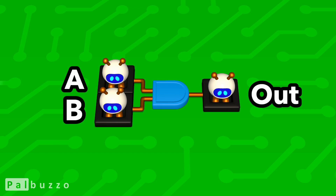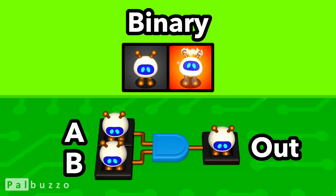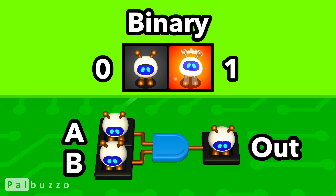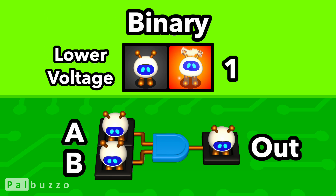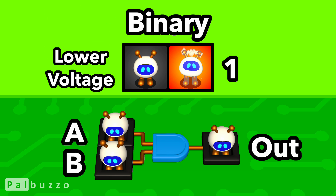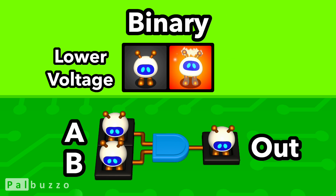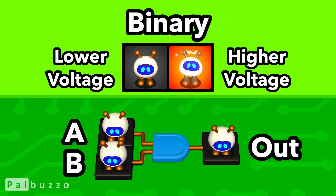Its inputs and output are binary, meaning only two values are allowed: 0 or 1. In positive logic circuits, a 0 is represented by a lower voltage level, often close to 0 volts, and a 1 is represented by a higher voltage level.